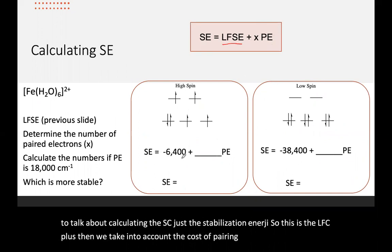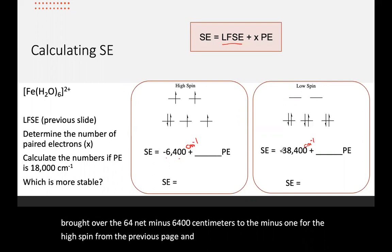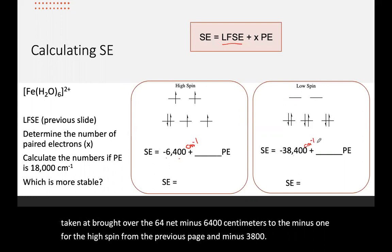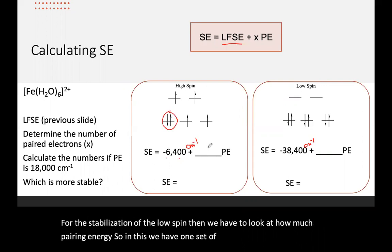I brought over the negative 6,400 centimeters to the minus one for the high spin from the previous page and minus 38,400 for the stabilization of the low spin. Then we have to look at how much pairing energy. So in this, we have one set of electrons that are paired, so it would be plus one pairing energy.